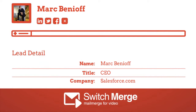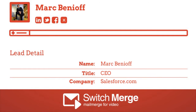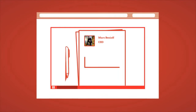Imagine mail merge, but for video. Using Switch Merge, marketers and salespeople can take what they know about a lead in their customer relationship management or marketing automation platform, merge in that person's name, title, insert their photo, or even show them the ROI of purchasing their product.